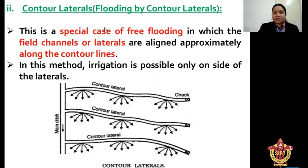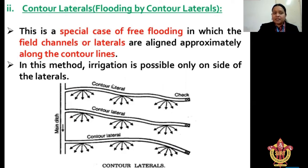Contour laterals method: this is a special case of free flooding in which the field channels or laterals are aligned approximately along the contour lines. In this method, irrigation is possible only in one direction of the lateral.